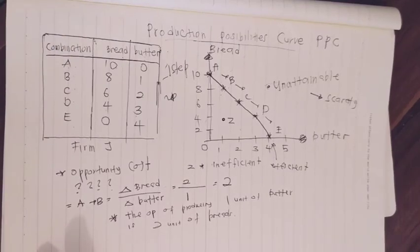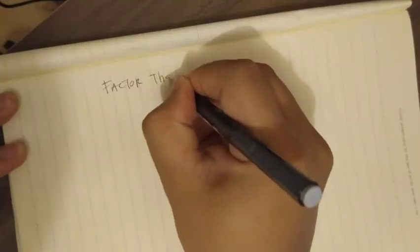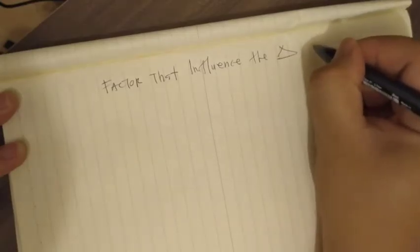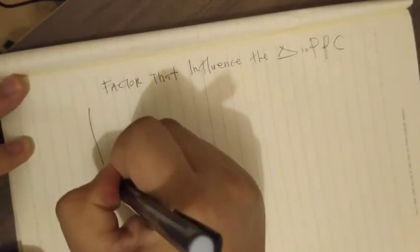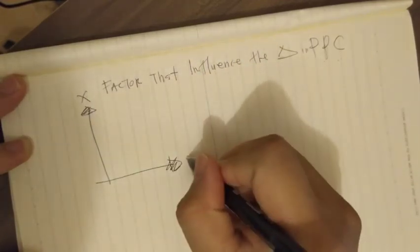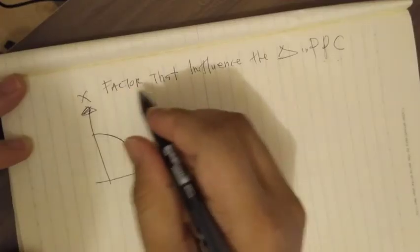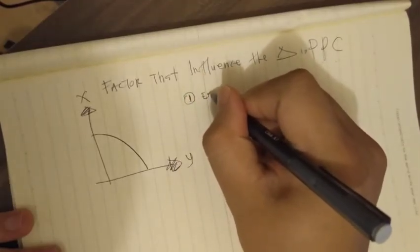In this video we look at factors that can influence the growth or movement of the PPC curve. So, factors that influence the change in PPC — Production Possibility Curve. Let's say there are two goods: Good X and Good Y. This is the initial PPC curve, with X on one axis and Y on the other.